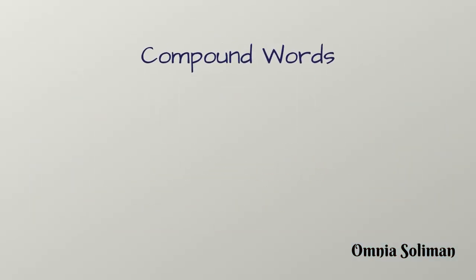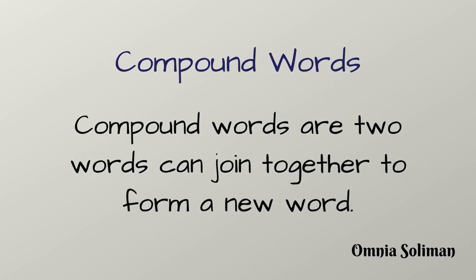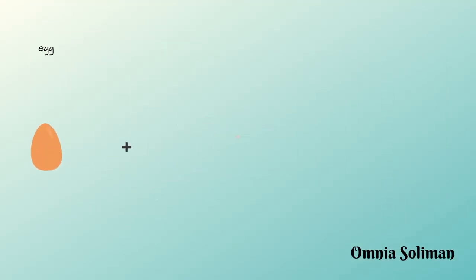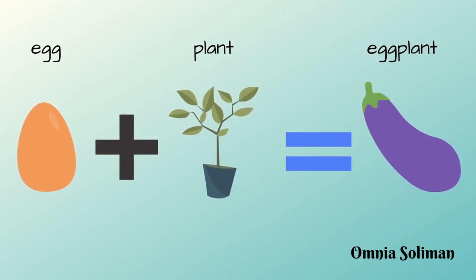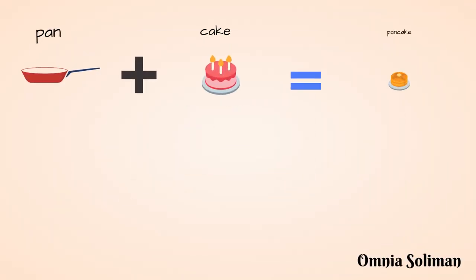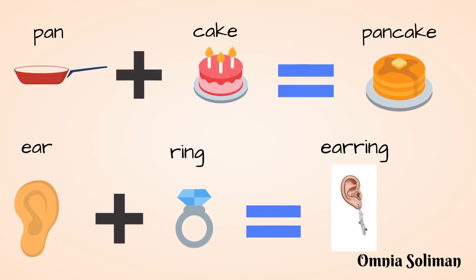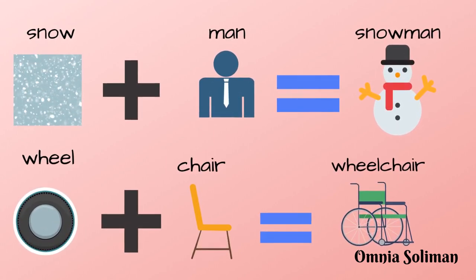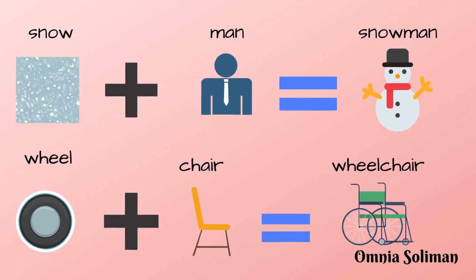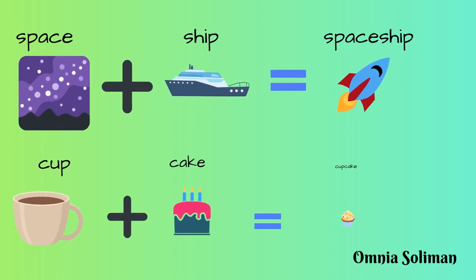Compound words. Compound words are two words conjoined together to form a new word. Egg plus plant is eggplant. Pan plus cake is pancake. Ear plus ring is earring. Snow plus man is snowman. Wheel plus chair is wheelchair. Space plus ship is spaceship. Cup plus cake is cupcake.